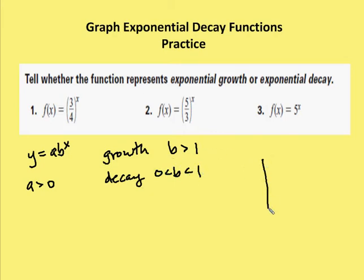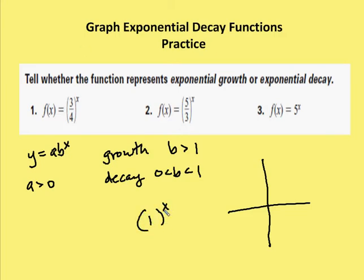Let's step back a second. What happens when b is equal to one? When b equals one and I take that value to the x power, as x gets larger and larger the y value stays at one. When x gets smaller, the output continues to be one — no change. One to any power is always one. So if a were three, y would just equal three. That's why b must be greater than one or between zero and one, but not equal to one.